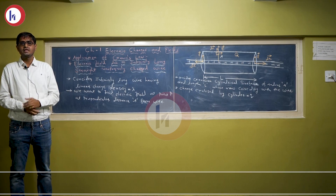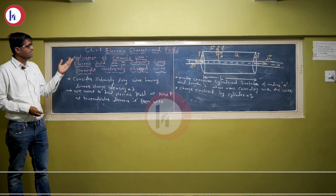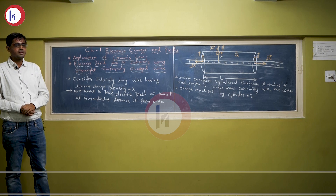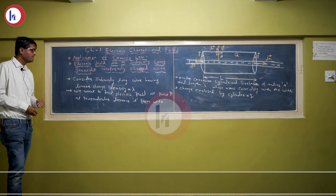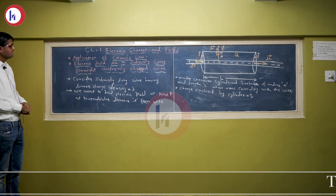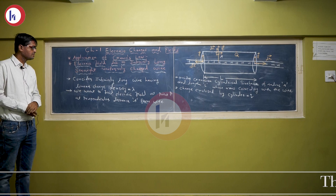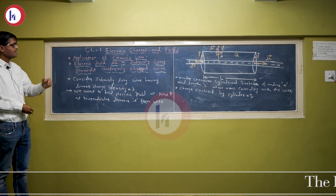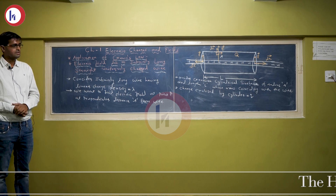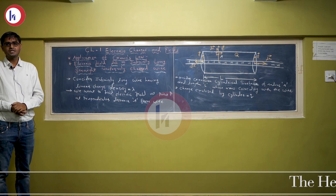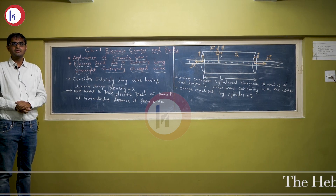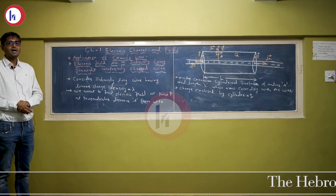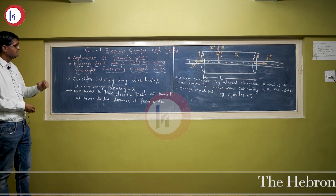Hello students, today we are going to understand chapter 1: Electric Charges and Fields. One of the topics of chapter 1 is the application of Gauss's law, in which we are going to understand the electric field due to an infinitely long straight uniformly charged wire. The wire is infinitely long and uniformly charged, meaning the charge per unit length on the wire is constant — that is a very important part of this theory.